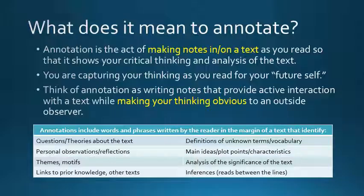You can annotate on multiple levels. Surface level observations like plot points, main ideas, or characteristics are a good place to start. You can amp up your annotations by including questions or theories about the text, themes or common motifs that you see repeated in the text, or even links to your own prior knowledge.